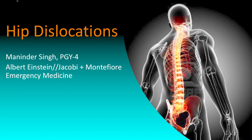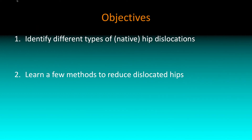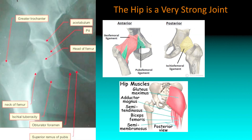Alright guys, we're going to move on. My talk is just going to be on hip dislocations. For anyone who doesn't know me, my name is Meninder, I'm one of the fourth years. Two main objectives today: identify the different types of native hip dislocations — it's different when you have prosthetics — and then we'll go through a couple of methods on how to reduce them.